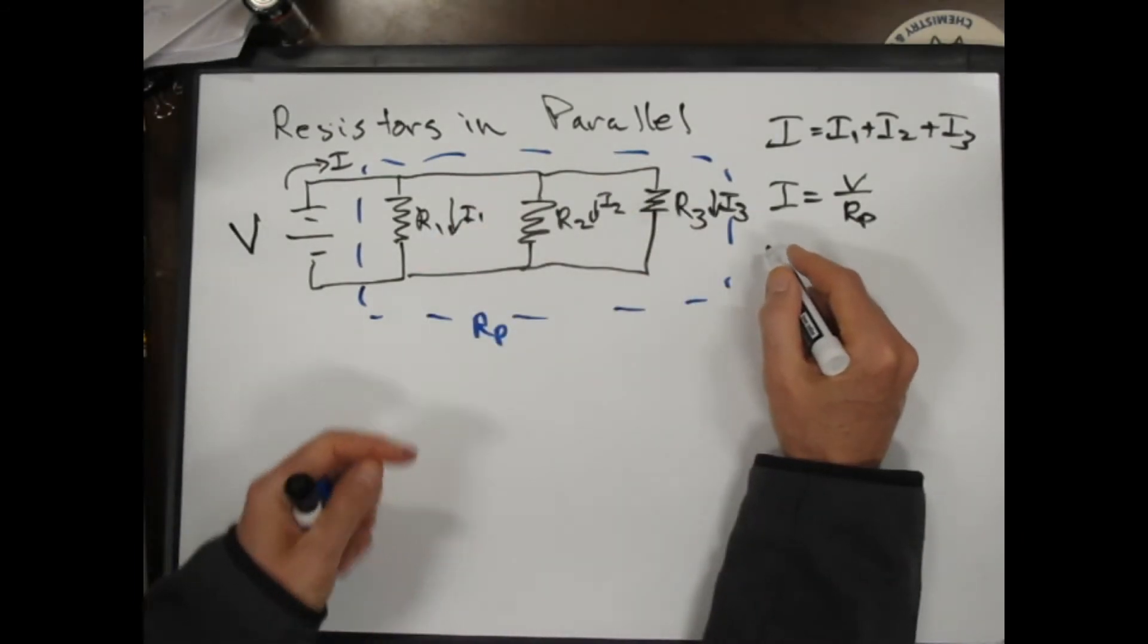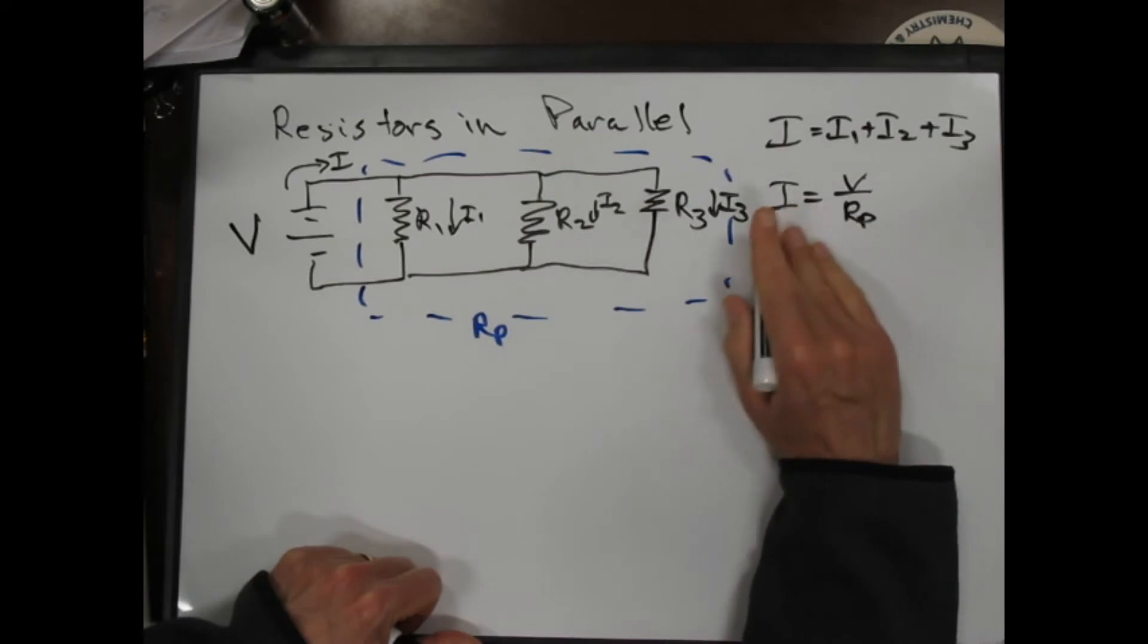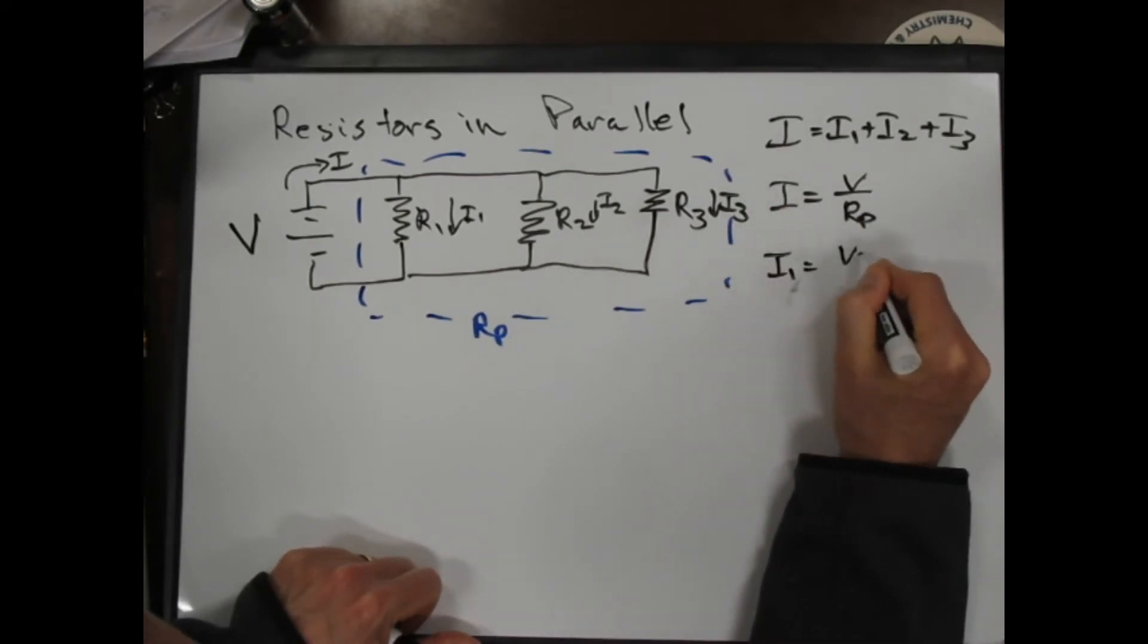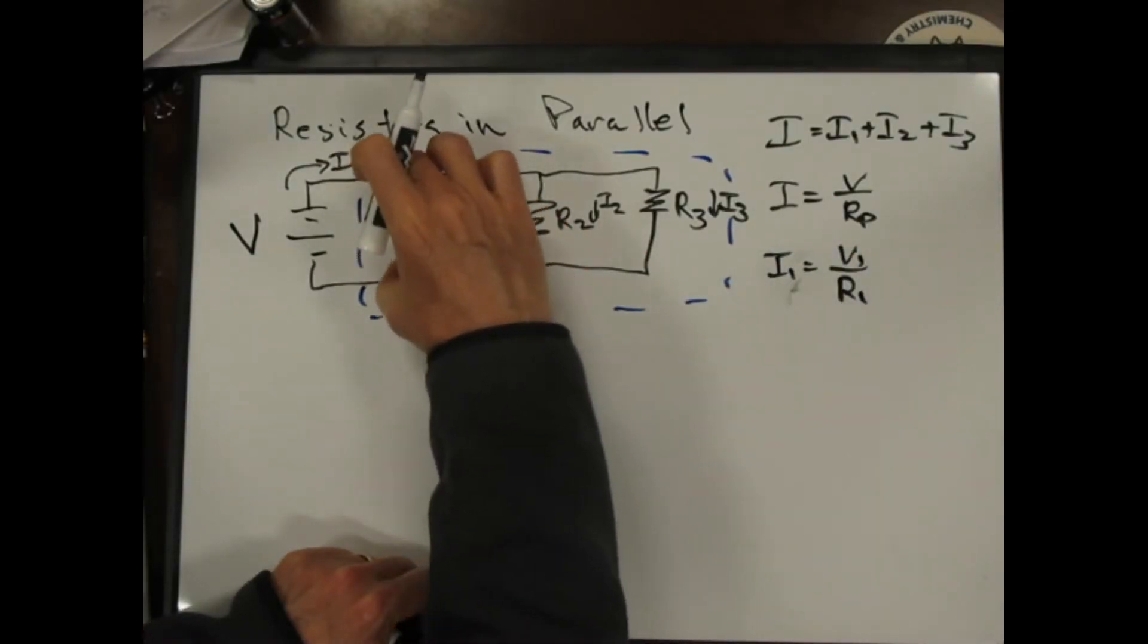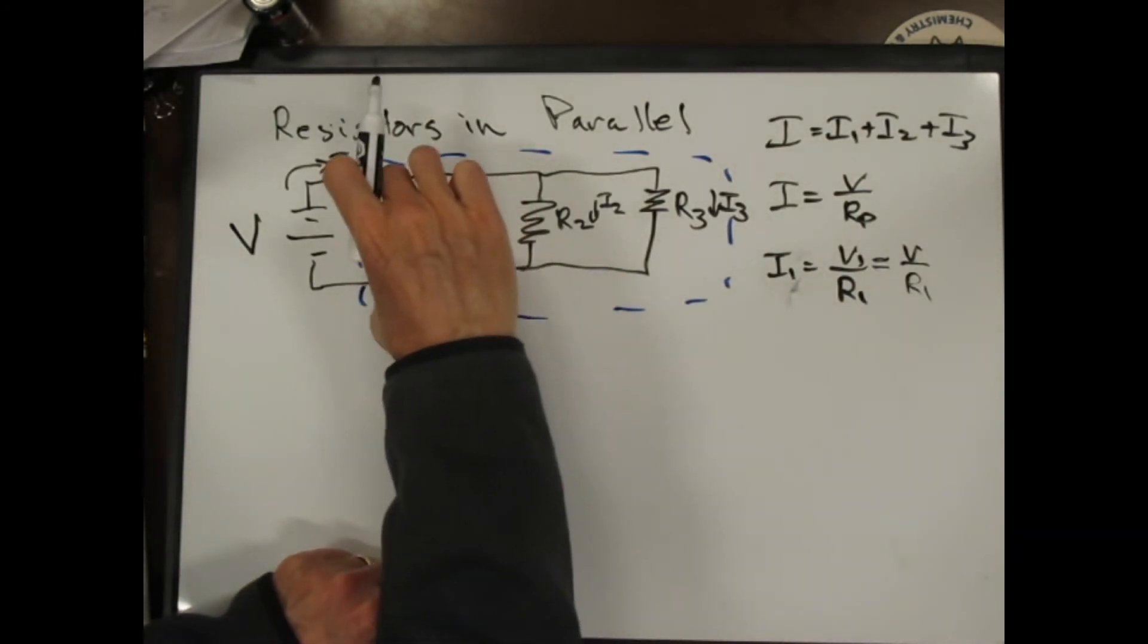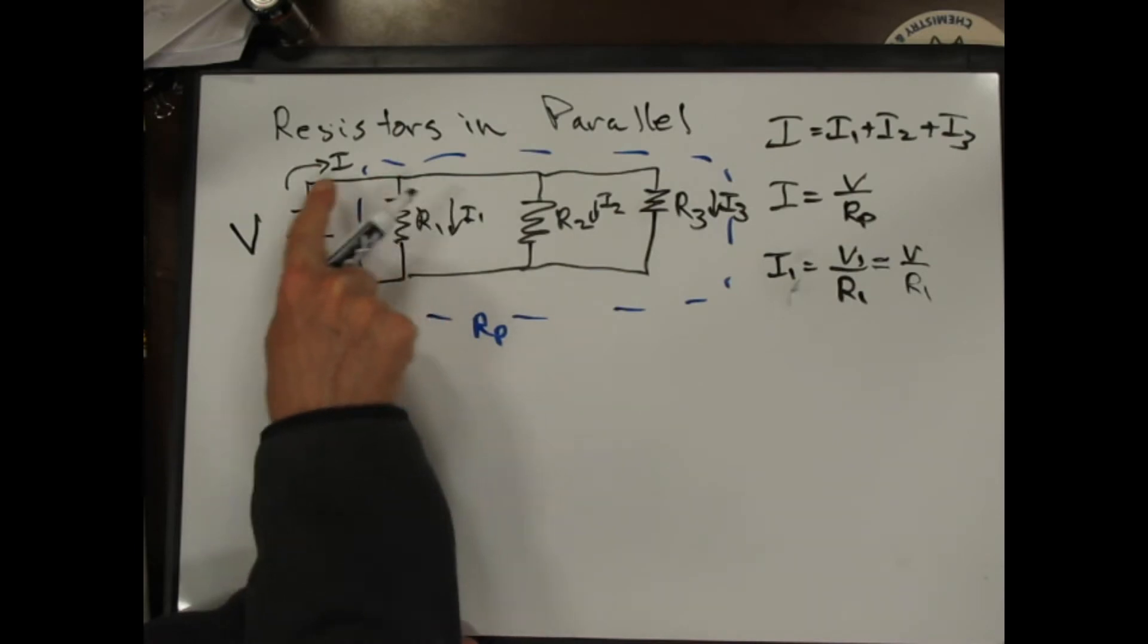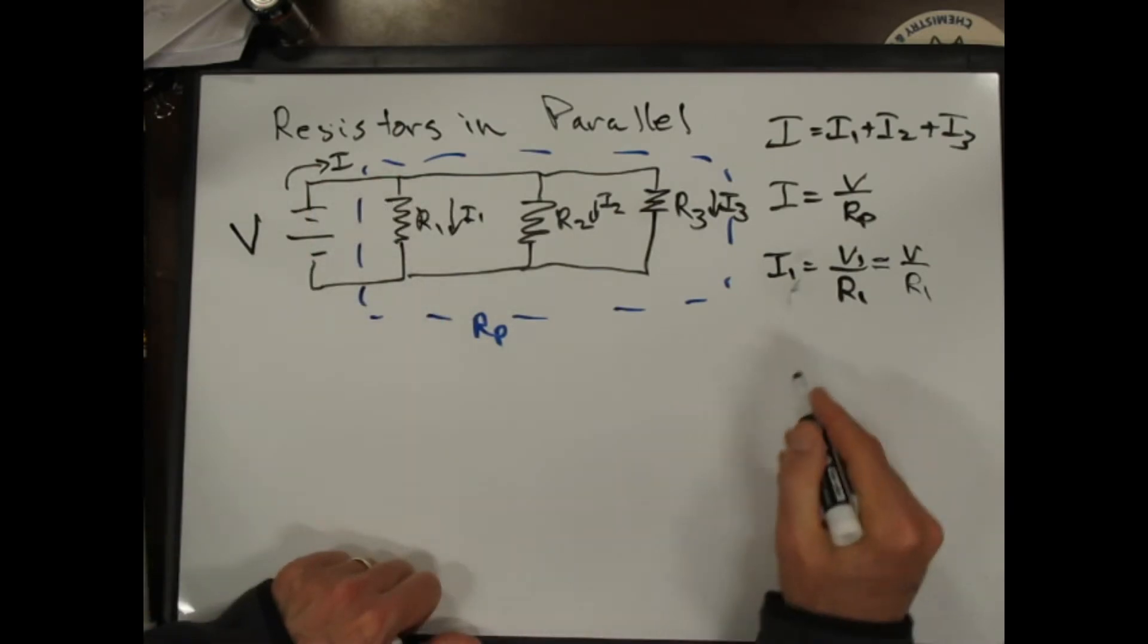Similarly, if I just look at this guy, I can say V1 is equal to, let's just write it this way, I1 is equal to V1 over R1. But V1, the voltage across R1 is just V. That is the voltage across this resistor, since it's connected by wires at both ends to the battery, it's just the same thing as the voltage on the battery.